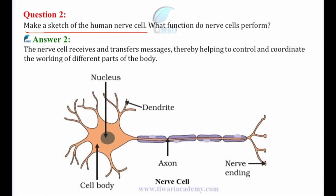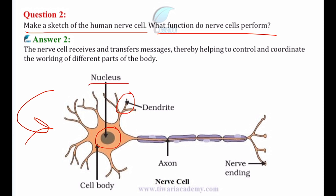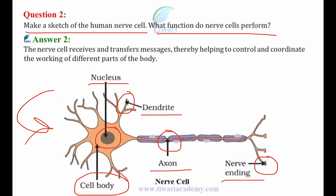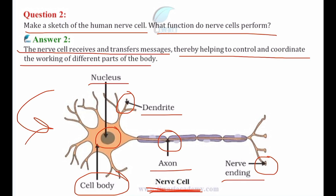Question number 2: make a sketch of the human nerve cell — what functions do nerve cells perform? In the diagram of a nerve cell, the nucleus is in the center, then there is the dendrite, the cell body, the axon, and the nerve ending. The nerve cell receives and transfers messages, thereby helping to control and coordinate the working of different parts of the body. Nerve cells are also called neurons.